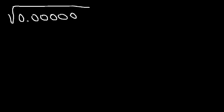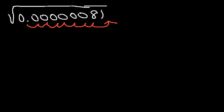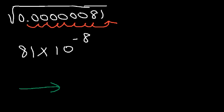Now you know how to take the square root of a decimal number if the number of digits is even. Now let's understand why it works — let's go back to this example: 0.000000081. How can we convert this decimal number into scientific notation? It's not going to be in proper scientific notation because I want 81, not 8.1 — it's easier to square root 81. If we move the decimal 8 units to the right, this is going to be 81 times 10 to the negative 8.